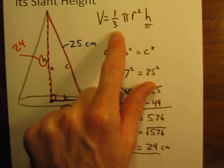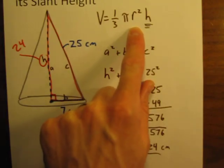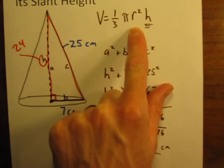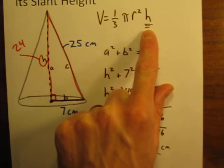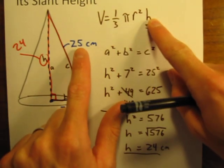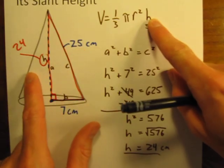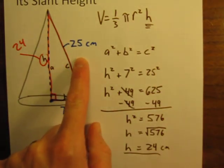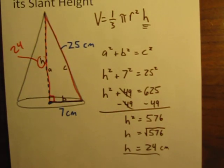The volume of a cone is equal to one third times pi times the radius squared times the height. And now, for height, we're not going to use 25. We're going to use, that's our slant height, we're going to use our actual height of 24.